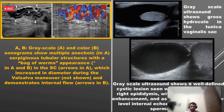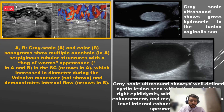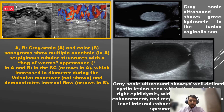The second image shows a spermatocele, which is due to dilatation of the efferent tubules. It resembles an epididymal cyst but is usually larger and contains internal echoes. The next image shows a tunica vaginalis hydrocele — a collection of serous fluid between the visceral and parietal layers. Internal echoes may be present depending on cholesterol crystal content. In the case of a patent processus vaginalis, a congenital hydrocele can develop.